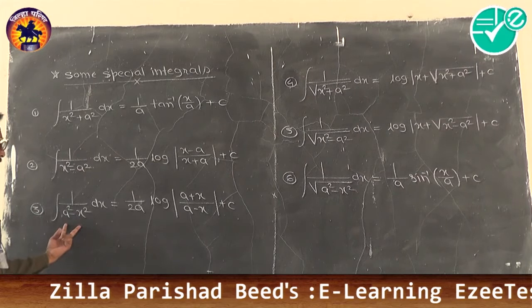Fifth problem: integration of 1/√(3x² + 8) dx. We rewrite as 1/√((√3·x)² + (√8)²) dx.